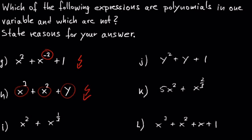In I we have x squared plus x raised to 1 over 3. Since 1 over 3 is not a whole number, this is also not a polynomial.